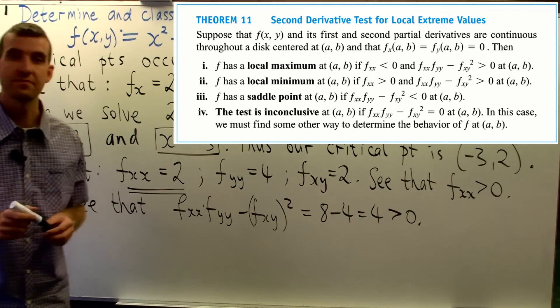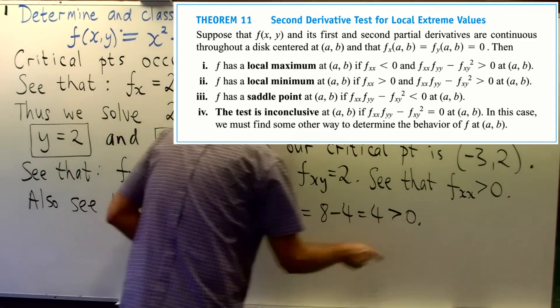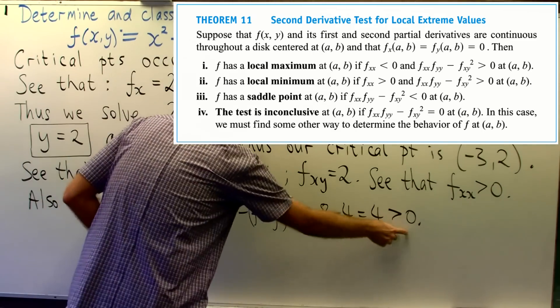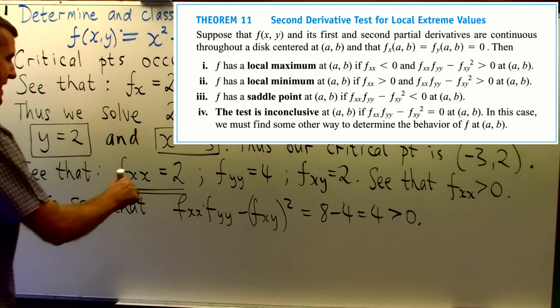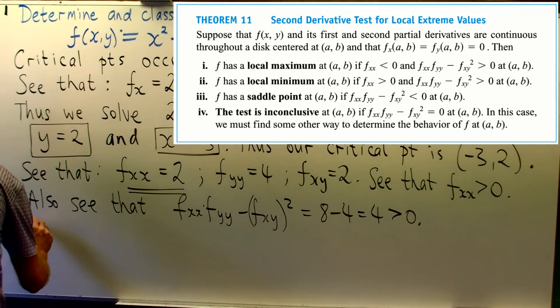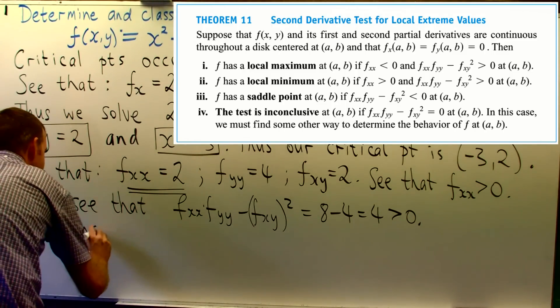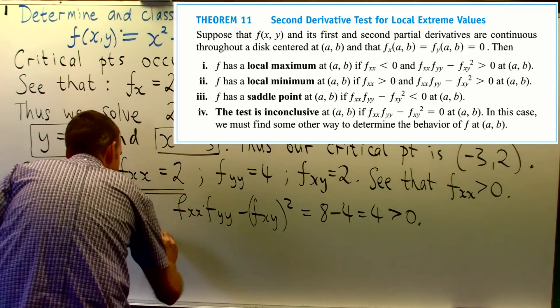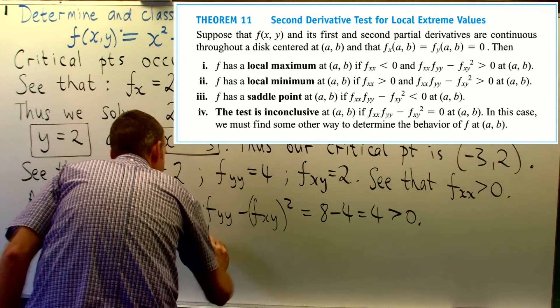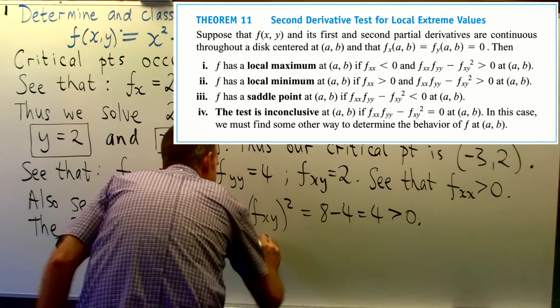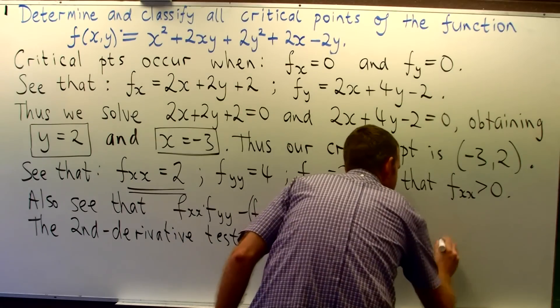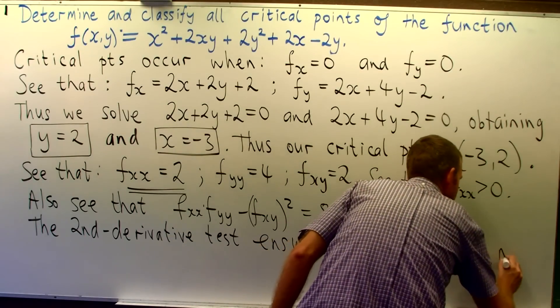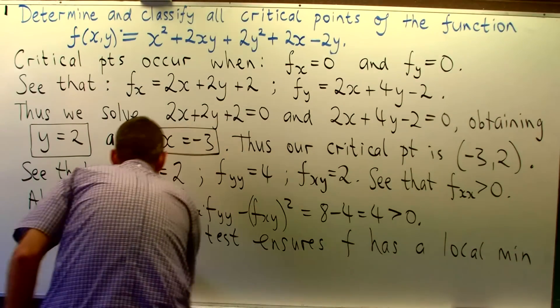Okay, so the discriminant is positive. So if we take this information and the information that f sub xx is positive, we can now apply our second derivative test and conclude that f must have a local minimum at our critical point.